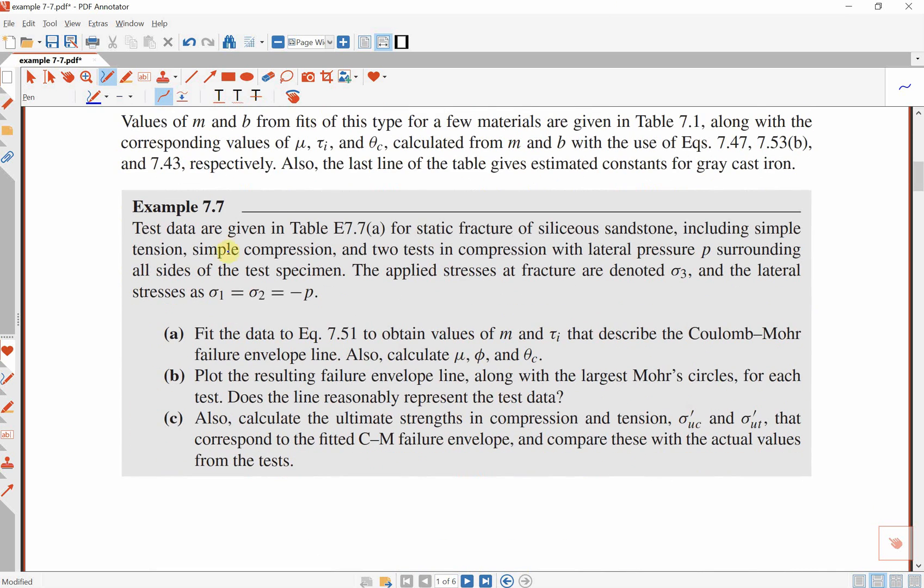The question says the test data are given in table 7-7 for a static fracture of this material, including simple tension, simple compression, and two tests in compression with lateral pressure p surrounding all sides of the test specimen. The applied stresses at fracture are denoted as sigma 3 and lateral stresses as sigma 1 and sigma 2 equals to minus p. And a couple of things are asked here to do. The first thing is fit the data to equation 7.51 to obtain values for m and tau i and describe the Coulomb-Mohr failure envelope line. Also calculate the mu, phi, and theta c.